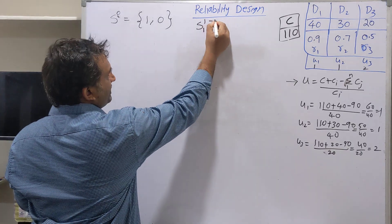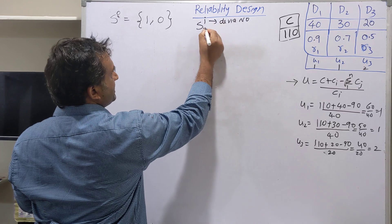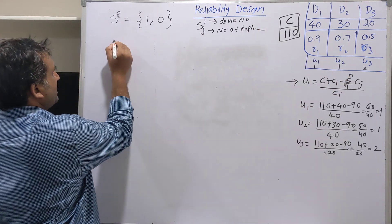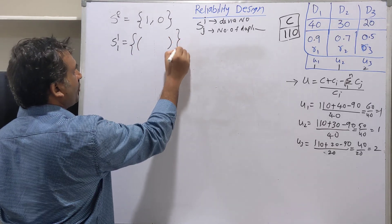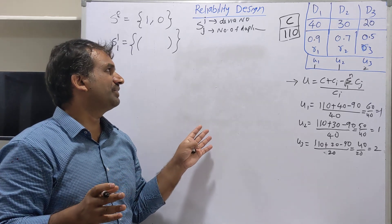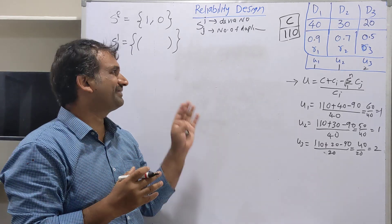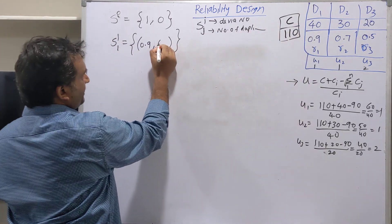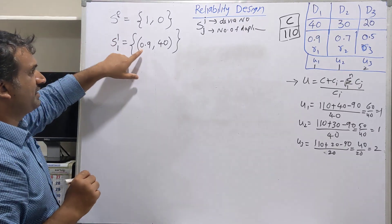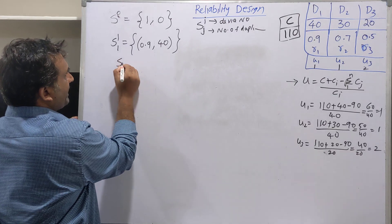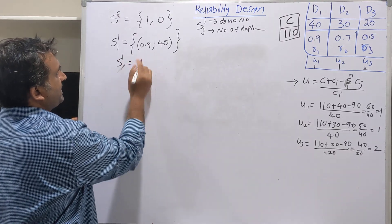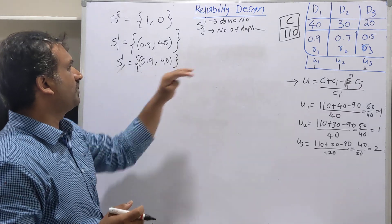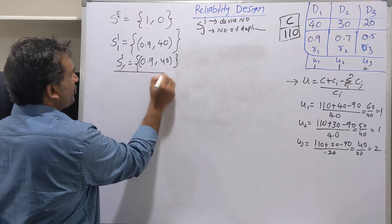In the notation S(i,j), i represents the device number and j represents the number of duplications. We solve level by level starting with S1,1. For device 1, one copy: the reliability is 0.9 and the cost is 40. So S1 = {(0.9, 40)}. In other examples with multiple copies, we take the union of all copies.